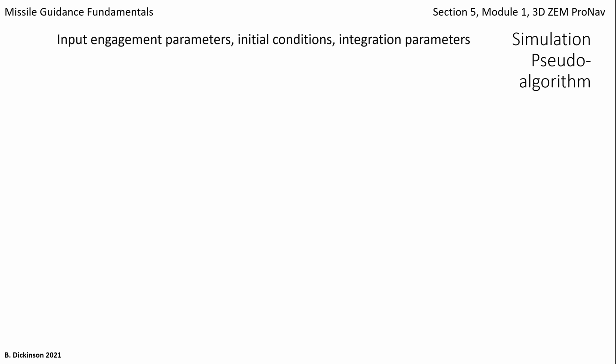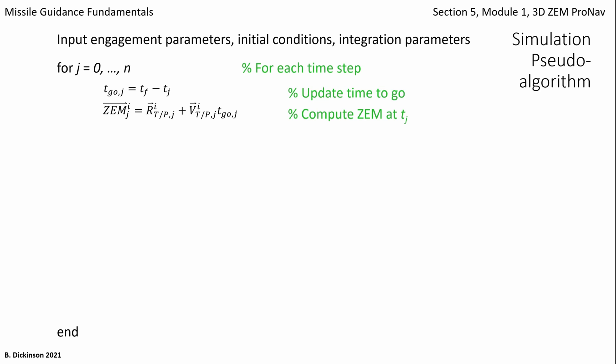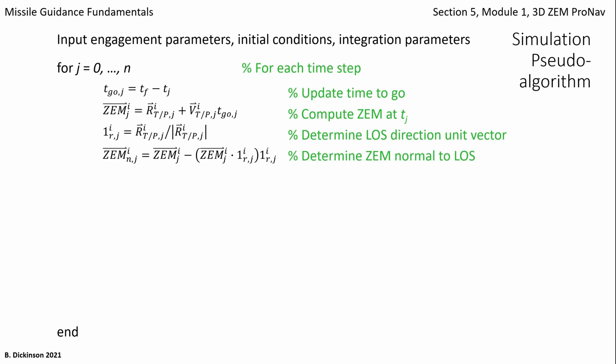Now let's bring this all together with a pseudo algorithm for simulation. We start off like we did with the previous two-dimensional sims, where we input the engagement parameters. Once we've set up the engagement initial conditions and parameters, then for each time step starting at the initial time and going all the way to end time steps, we do the following procedure: first, update your time to go; then compute zero effort miss at the current time step; determine the line of sight direction resolved in the inertial coordinate system; and finally, compute zero effort miss perpendicular to the line of sight. That's the necessary input to the zero effort miss form of PRONAV. Now we can proceed to compute the kinematics.